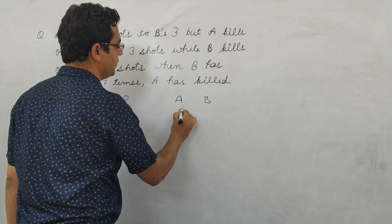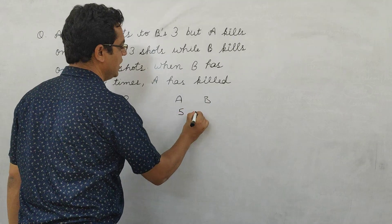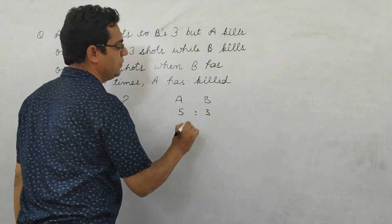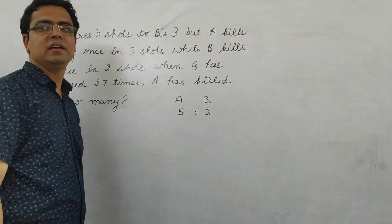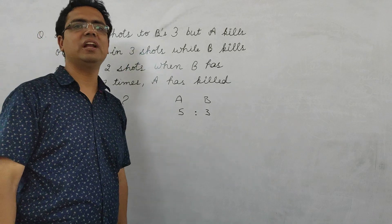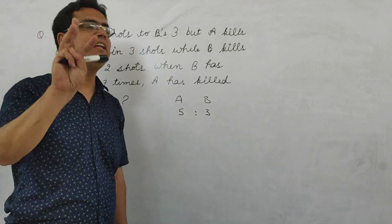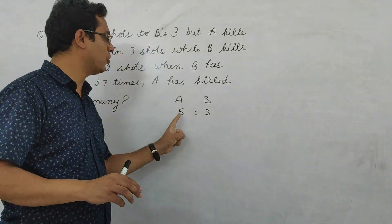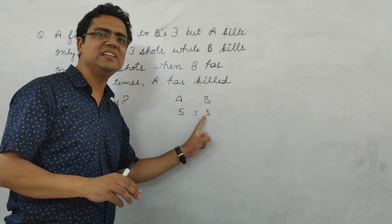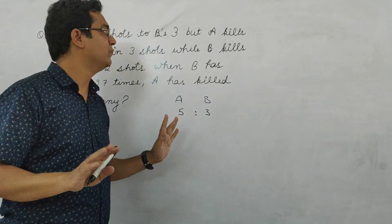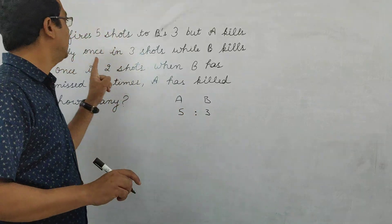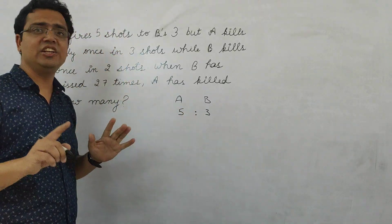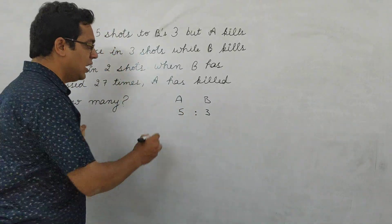A fires 5 times to B's 3 — that's the ratio of shots. A kills once in 3 shots. So we need to work out A's hit count from this ratio.